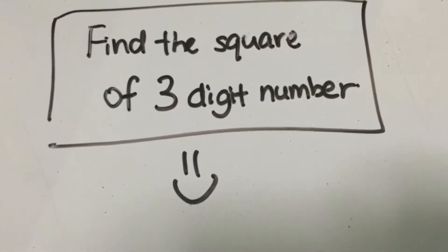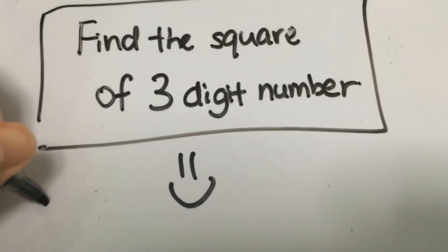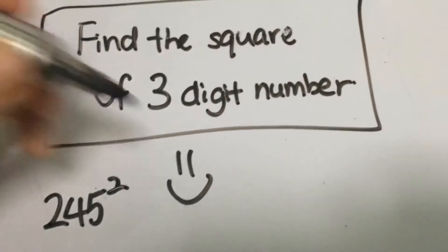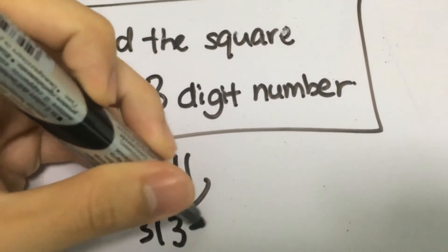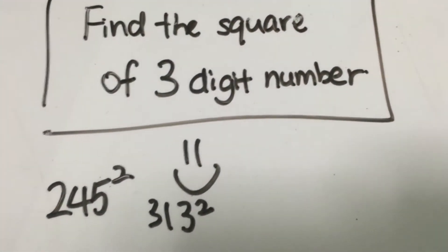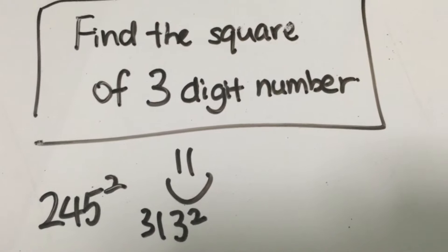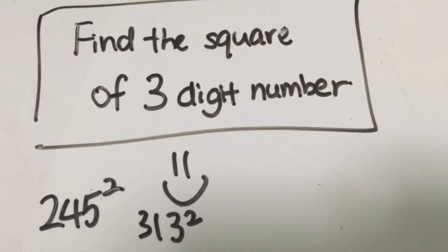So let's say for example if I give you 245 squared or maybe 313 squared and so on and so forth, you'll be able to calculate the square of 3-digit numbers in a very simple way.